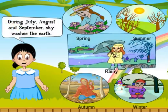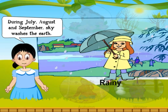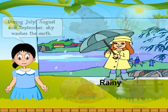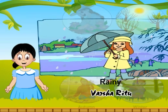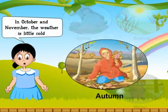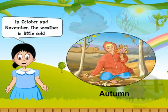During July, August and September, the sky washes the earth. Yes, I am talking about the rainy season — the monsoon. In India, we call this season Varsha Ritu.